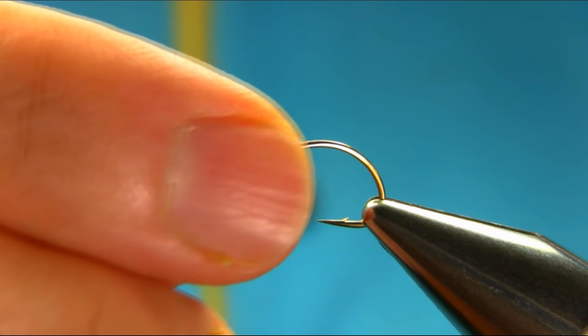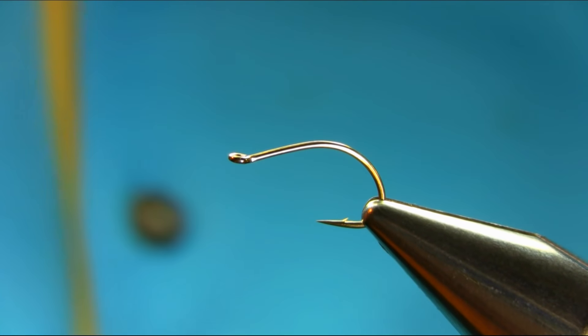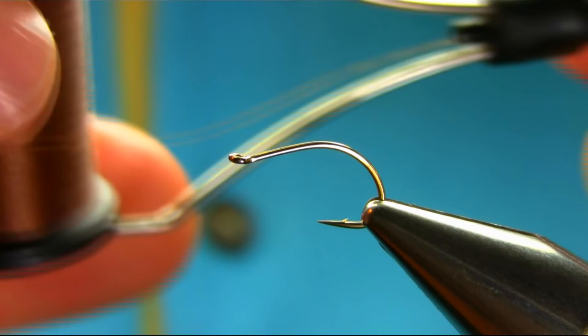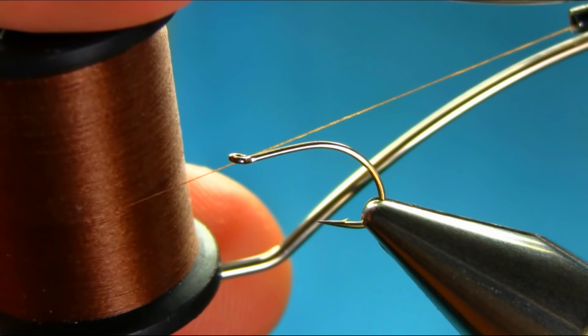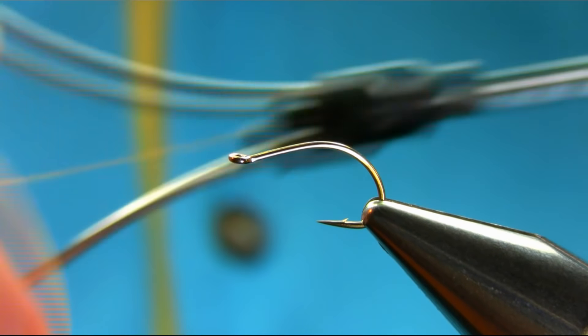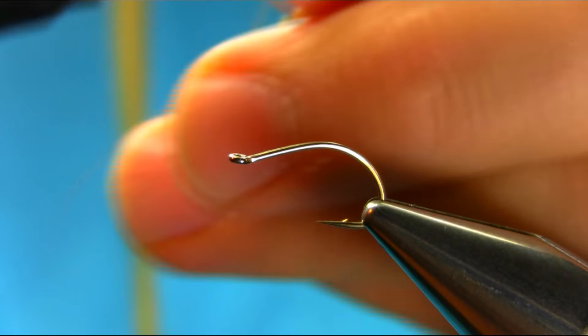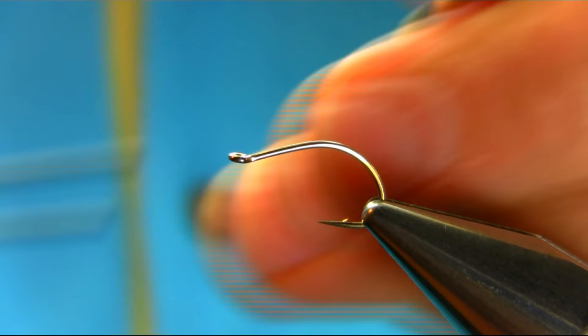Hi, this is a size 10 sage hook and you can use different sizes. I'm using this large hook for demonstration purposes. The thread I'm using is a camo color size 8-0, and wax the thread.